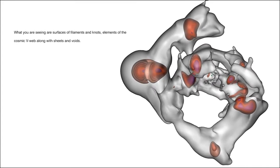What you are seeing are surfaces of filaments and knots, elements of the cosmic V-web along with sheets and voids. This construction is based on observations of the velocities of galaxies as they deviate from the universal expansion.